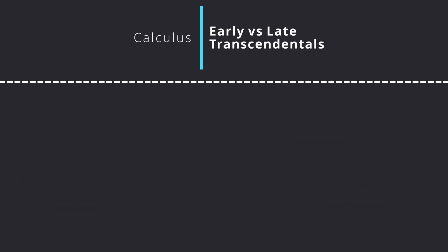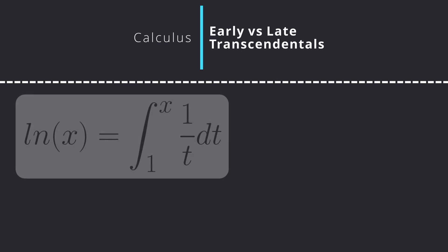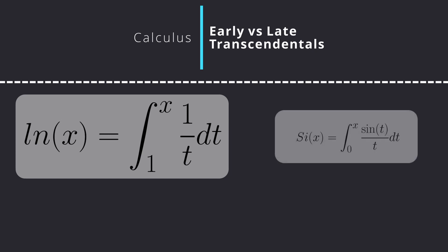Let's first look at how the differences in defining the logarithm stretch between the two topics. Late transcendentals defines the natural log of x to be the integral from 1 to x of 1 over t dt. This is reminiscent of other functions such as trigonometric integrals like Si(x), given how something unintegrable is then integrated via a definition. This means that logarithms are left until after integrals, given that a logarithm is, for all intents and purposes, the result of an integral.